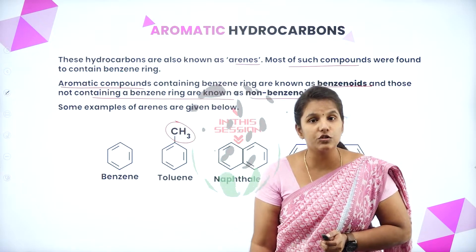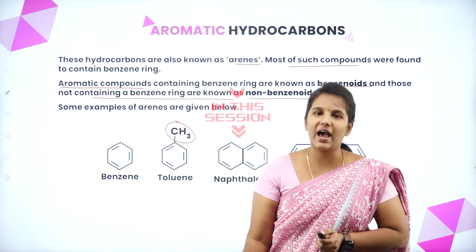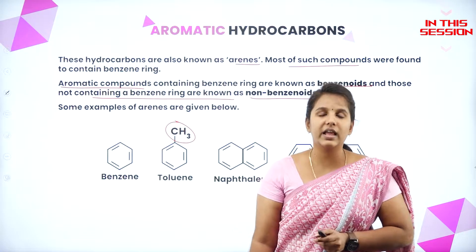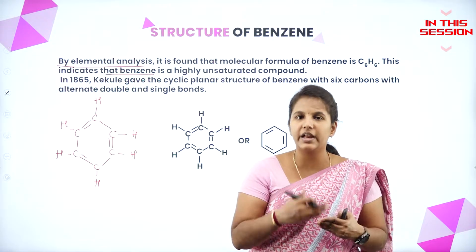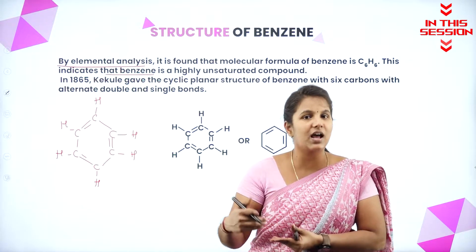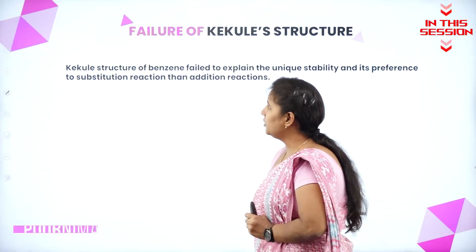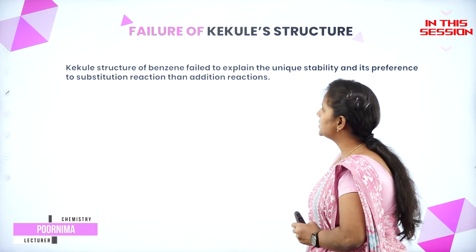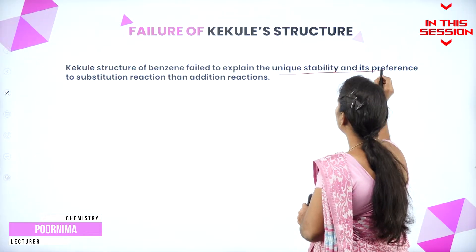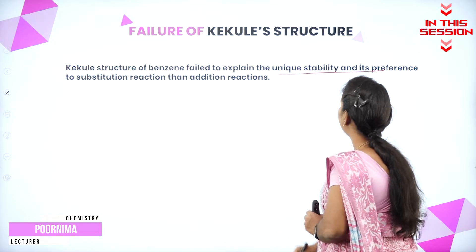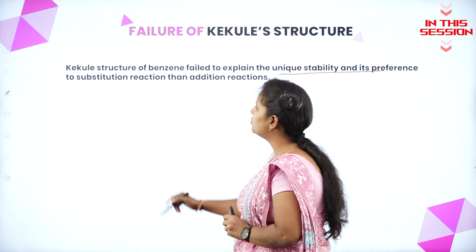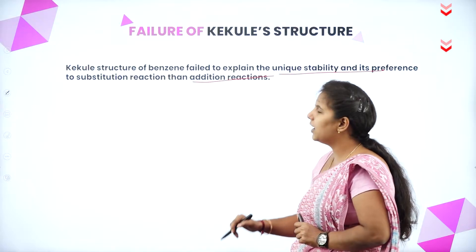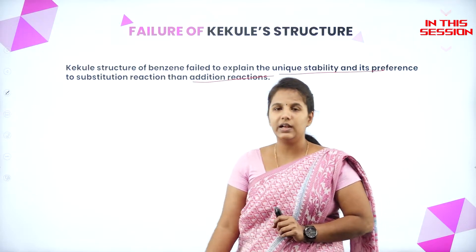Aromatic hydrocarbons are also known as arenes and they give a pleasant odour. When we write the double bond between carbon atoms, it indicates that it is an unsaturated compound. The Kekulé structure of benzene failed to explain the unique stability and the preference for substitution reactions over addition reactions.